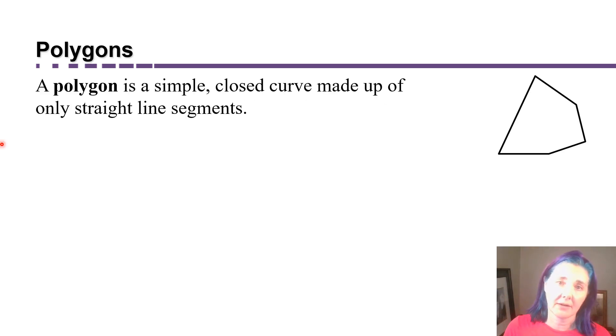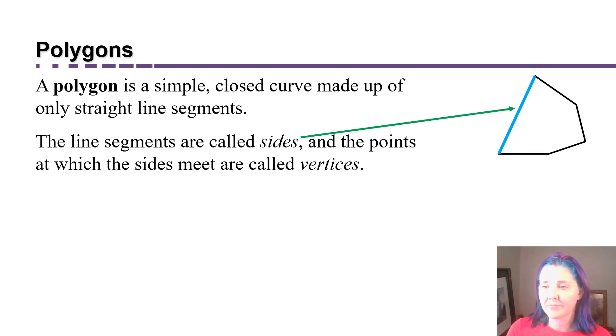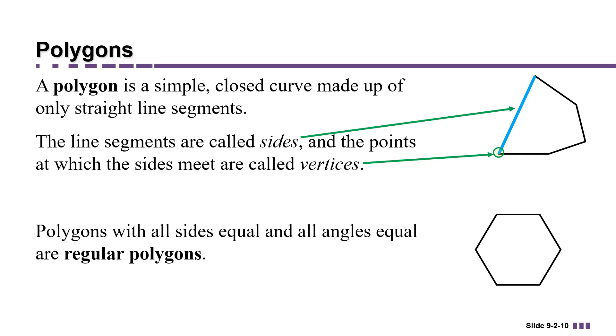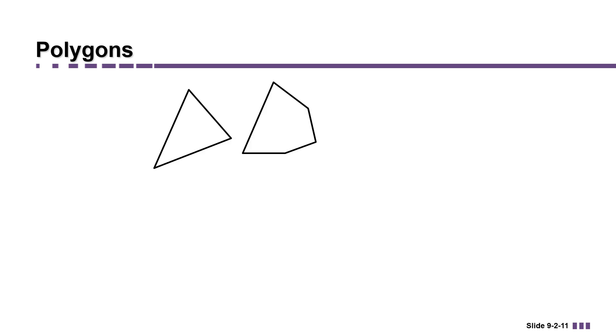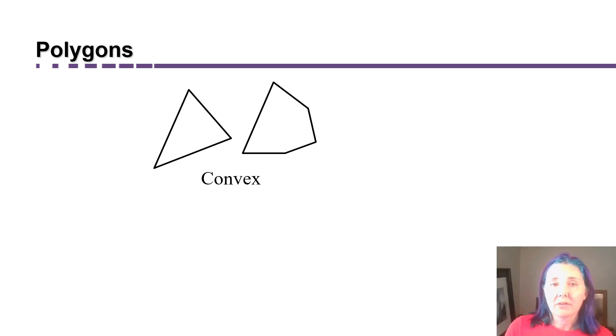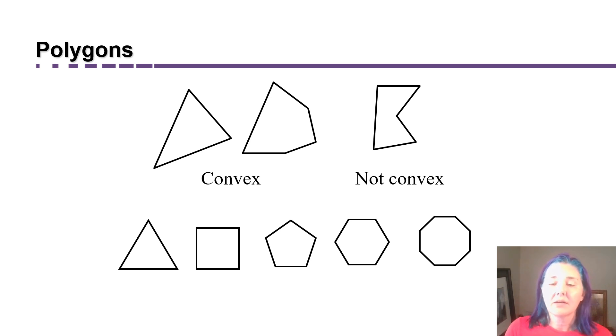Another category of curves are called polygons. A polygon is simple, closed, and made up of only straight line segments. The line segments are called the sides, and the points at which the sides meet are called the vertices. Polygons that have all sides of equal length and all angles of equal size are called regular polygons. Polygons can be categorized according to whether they are convex or not convex. The polygons that fall into the category of regular polygons are highly recognizable. We use them a lot, and these are always convex.